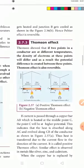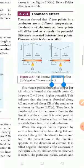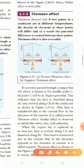Next is the Thomson effect. What is the Thomson effect? There is a positive Thomson effect and a negative Thomson effect. If two points in a conductor are at different temperatures, the density of electrons at those points will be different. As a result, a potential difference is created between those points. The Thomson effect is also reversible.